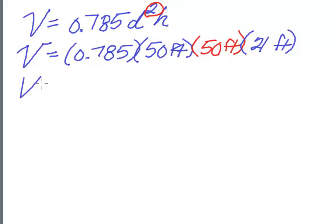So my volume ends up being 0.785 times 50, times 50 again, times 21. And I'm just going to do that twice, because every once in a while I do get fat fingers. So 0.785 times 50, times 50, times 21.